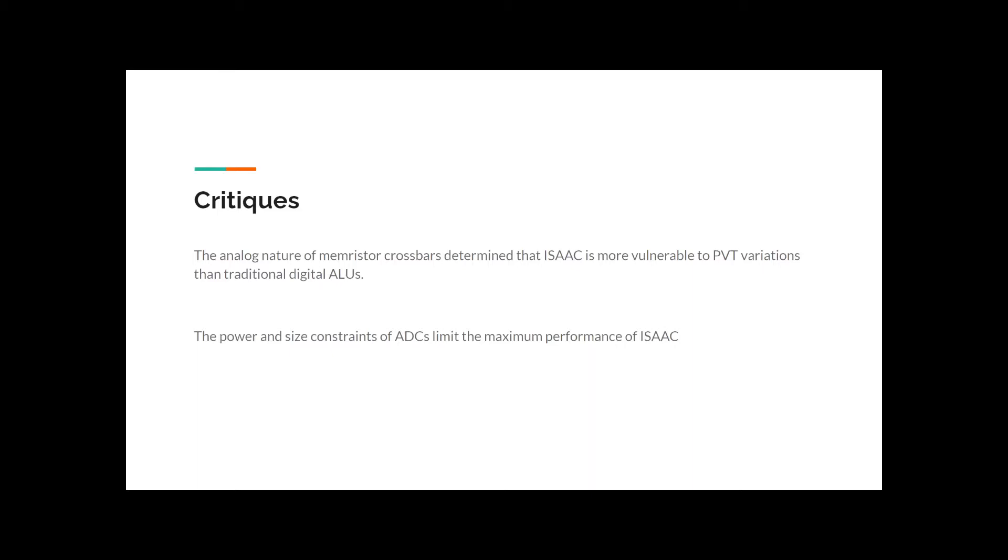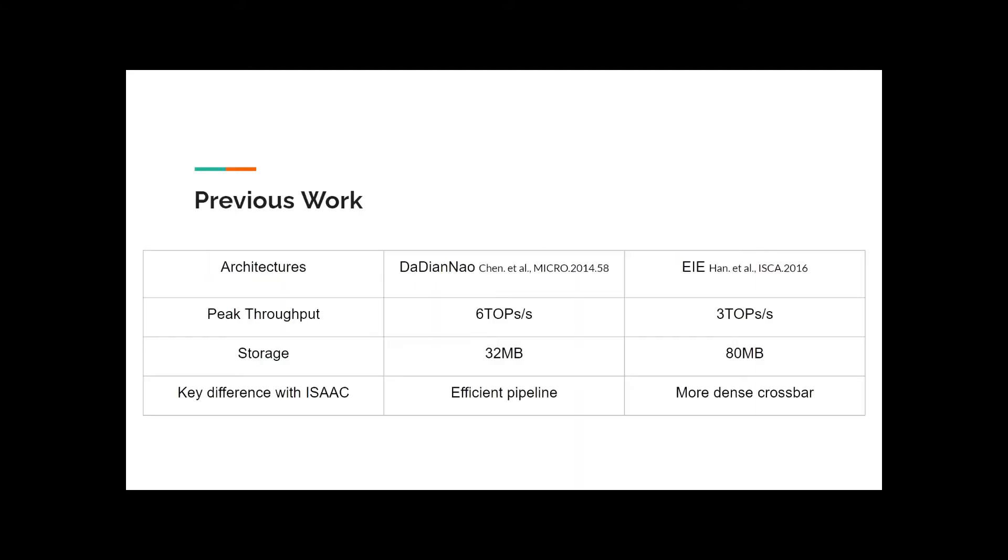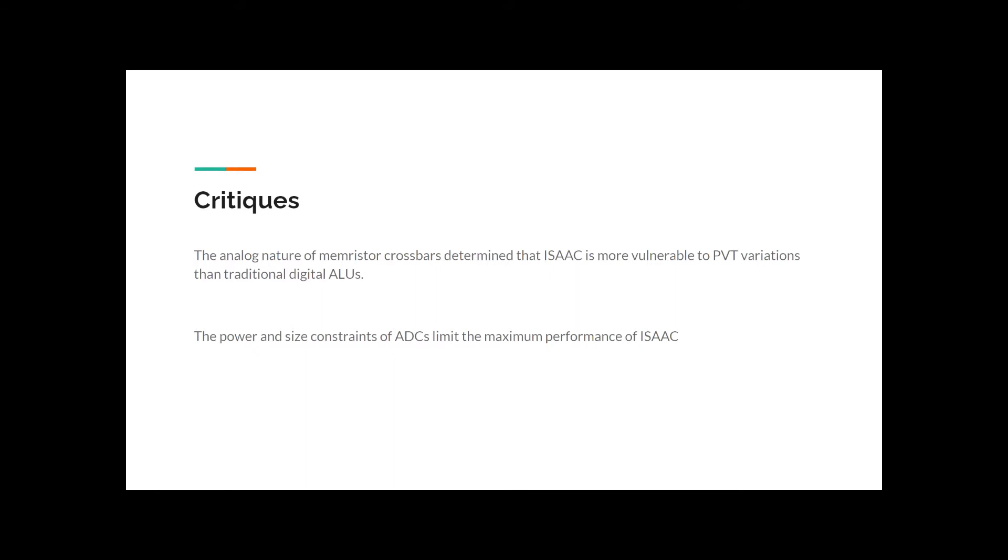ISAC-CE has two disadvantages compared to traditional digital accelerators. Although the analog arithmetic implemented by a memristor crossbar is very fast, its analog nature determines that it's more vulnerable to PVT variations, since all the neural weights are programmed in the resistance of the memristor. And the second thing is, as the size of the neural network grows, the overheads of ADCs grows almost exponentially. So ADCs are the most power-hungry part of ISAC. So this actually limits the maximum crossbar, the maximum network size of ISAC, and thus limits its maximum performance.